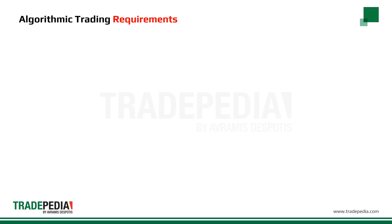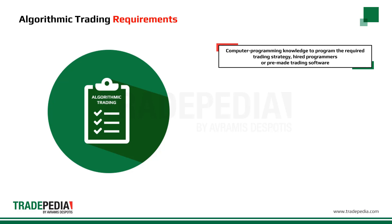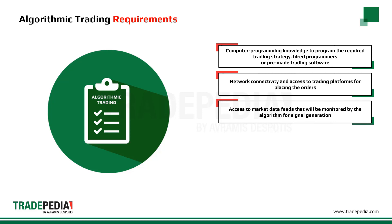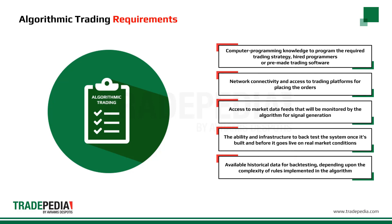In order to implement an algorithmic trading strategy, the following technical requirements are needed: computer programming knowledge to program the required trading strategy, or hired programmers or pre-made trading software; network connectivity and access to trading platforms for placing the orders; access to market data feeds that will be monitored by the algorithm for signal generation; the ability and infrastructure to back test the system once it's built and before it goes live on real market conditions; and available historical data for back testing, depending on the complexity of rules implemented in the algorithm.